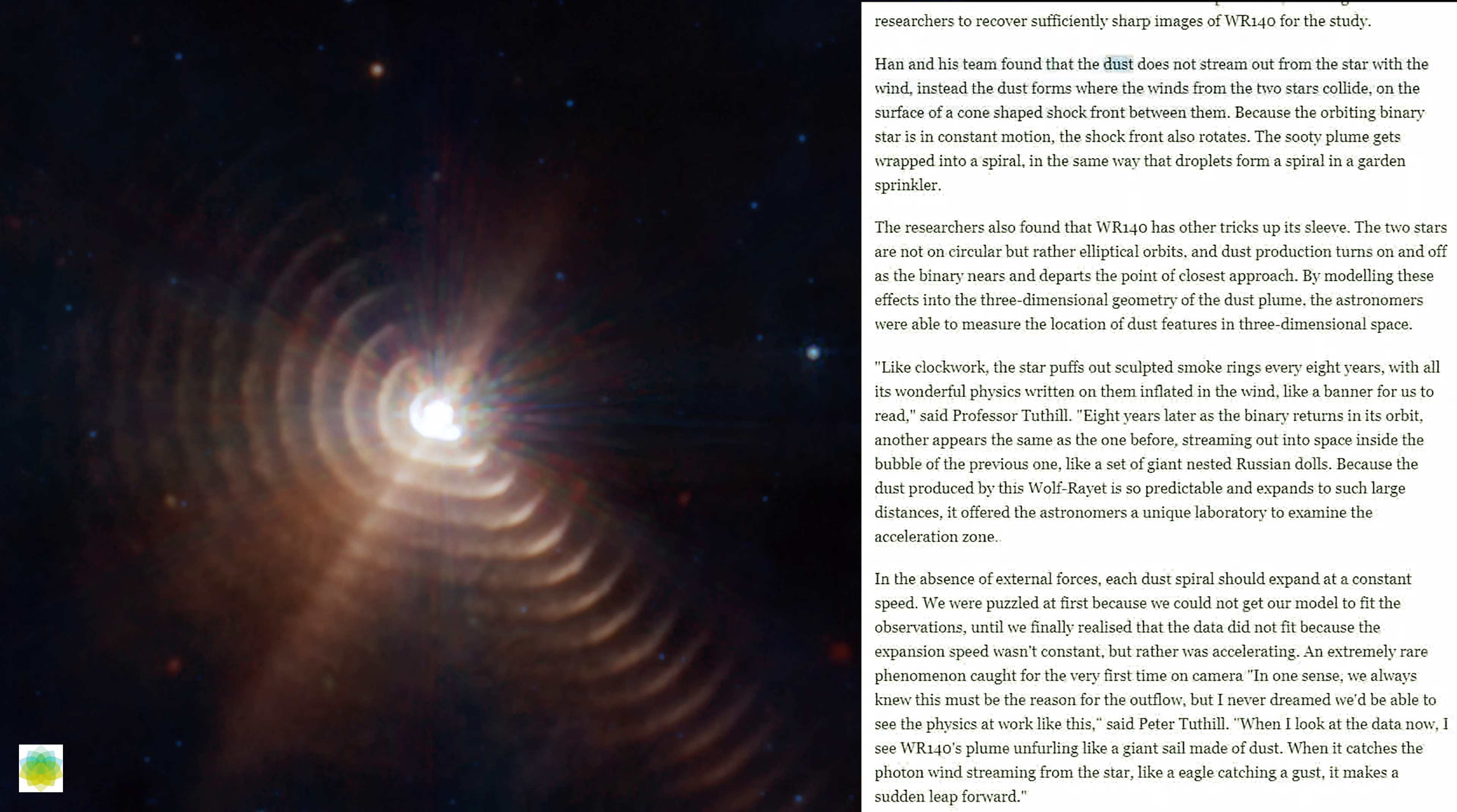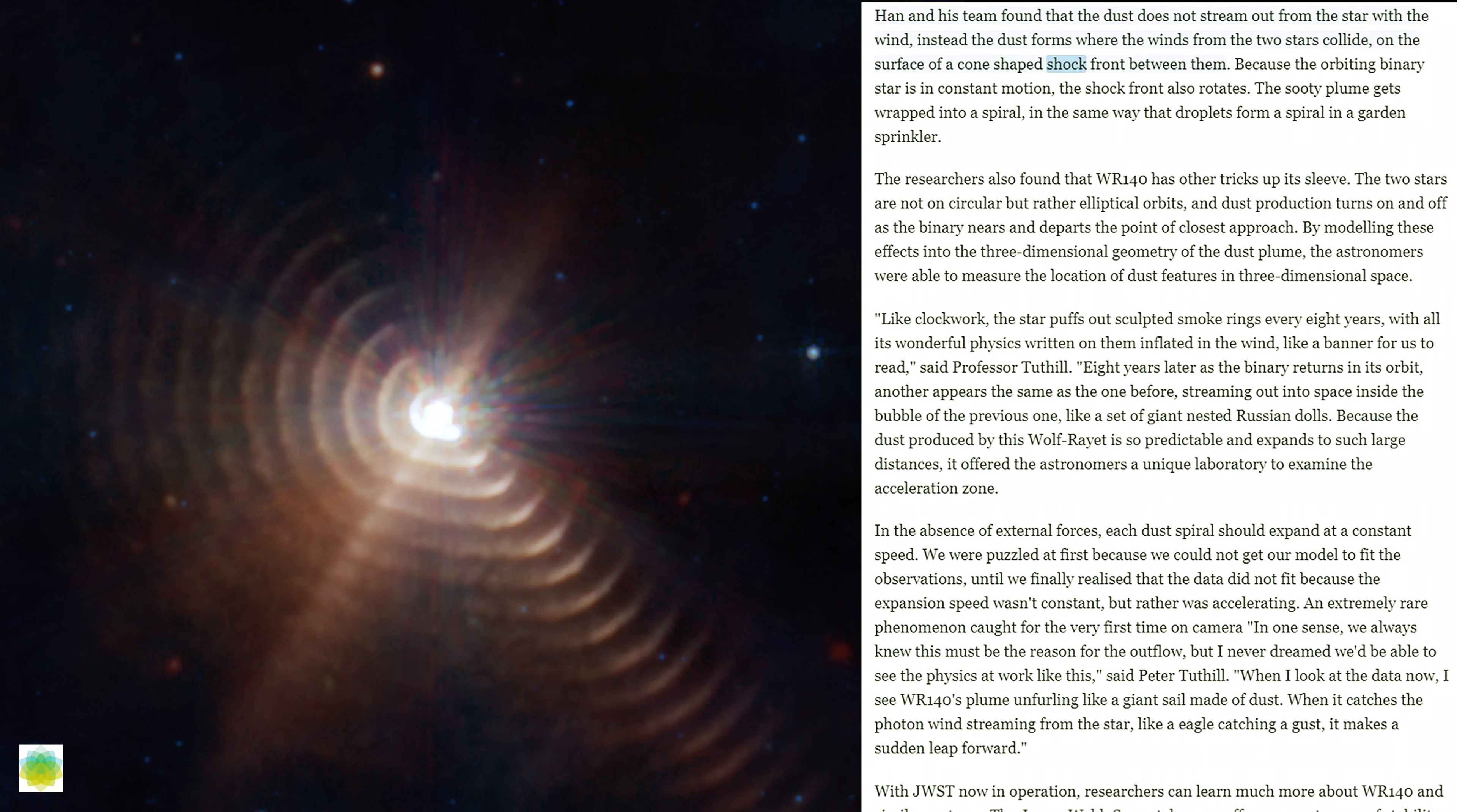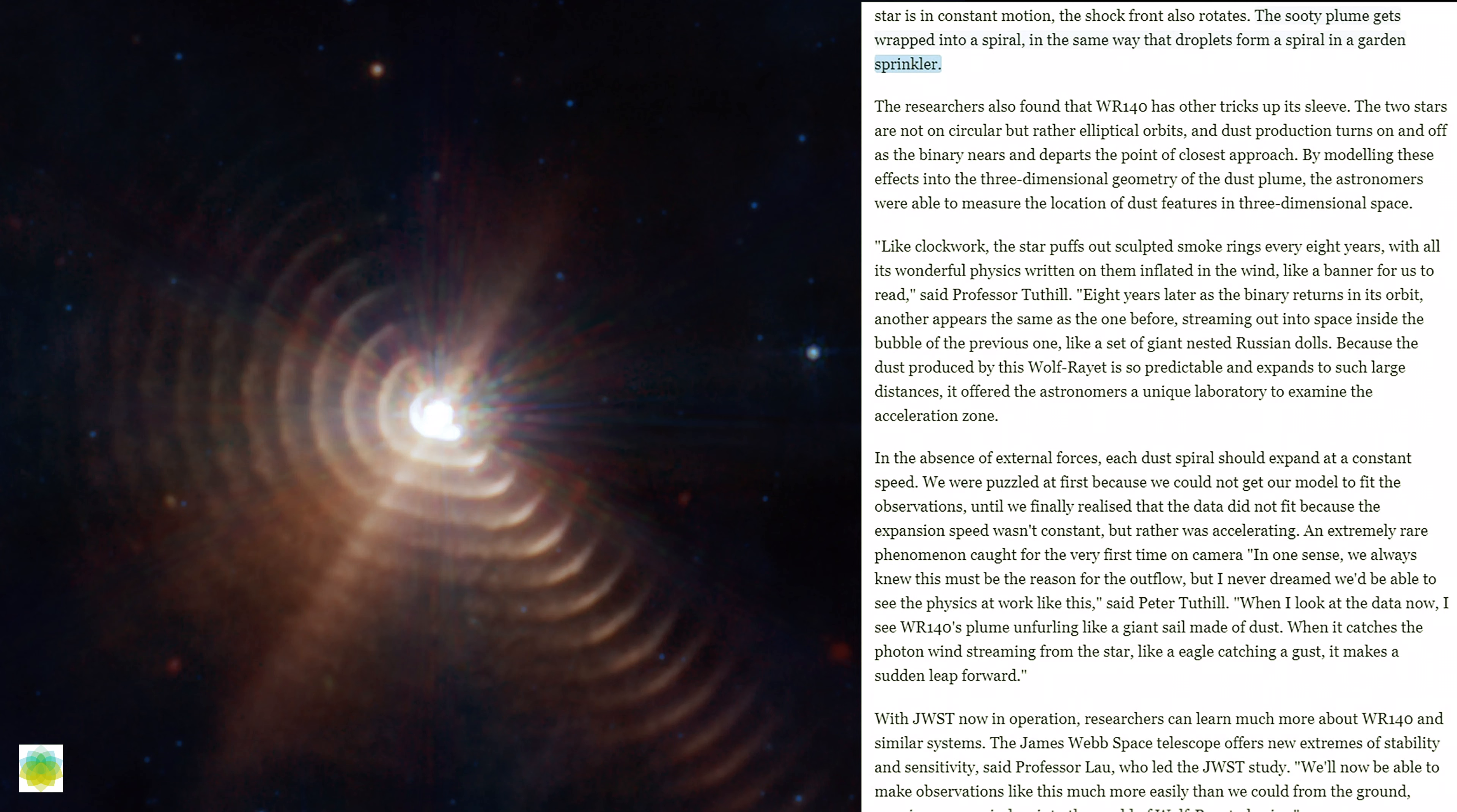Han and his team found that the dust does not stream out from the star with the wind. Instead, the dust forms where the winds from the two stars collide, on the surface of a cone-shaped shock front between them. Because the orbiting binary star is in constant motion, the shock front also rotates. The sooty plume gets wrapped into a spiral, in the same way that droplets form a spiral in a garden sprinkler.